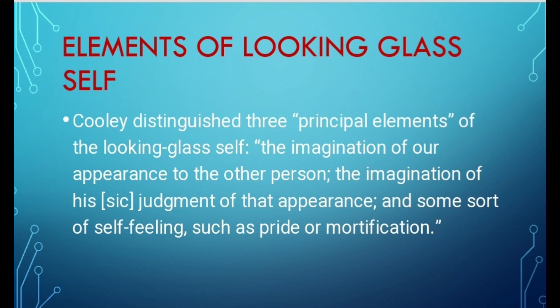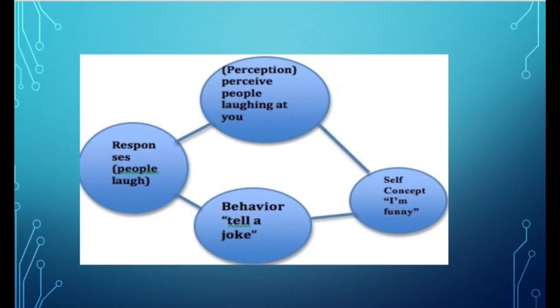Elements of the Looking Glass Self — Cooley distinguished three principal elements: first, the imagination of our appearance to the other person — کہ دوسرا person ہمارے بارے میں کیسی imagination بنا رہا ہے؛ second, the imagination of his judgment of that appearance؛ and third, some sort of self-feeling such as pride or mortification۔ یعنی ہم نے imagine کرنا ہے کہ دوسرا ہمیں کس طرح دیکھ رہا ہوگا، پھر وہ actual میں کیا سوچ رہا ہے، اور پھر اگر وہ اچھا دیکھے تو وہ تعریف کرے گا اور ہم خود کو اچھا سمجھیں گے۔